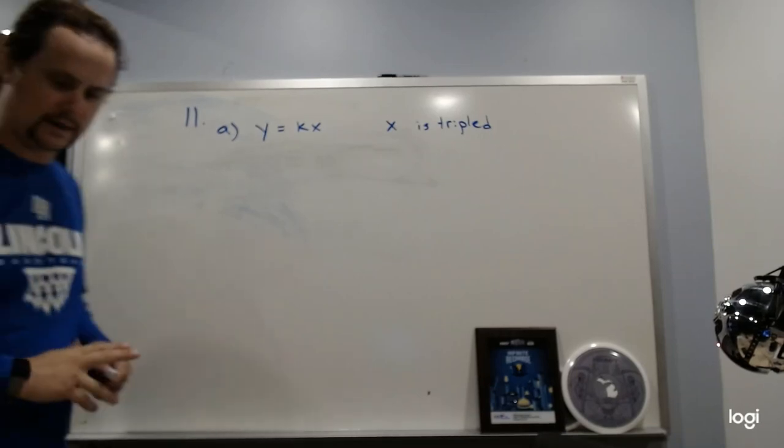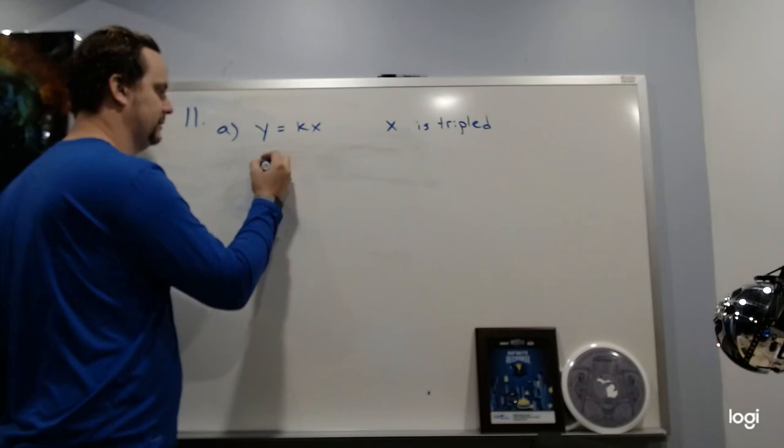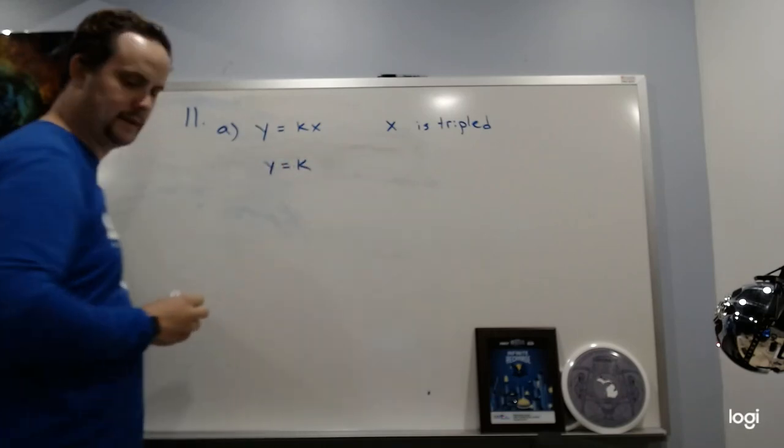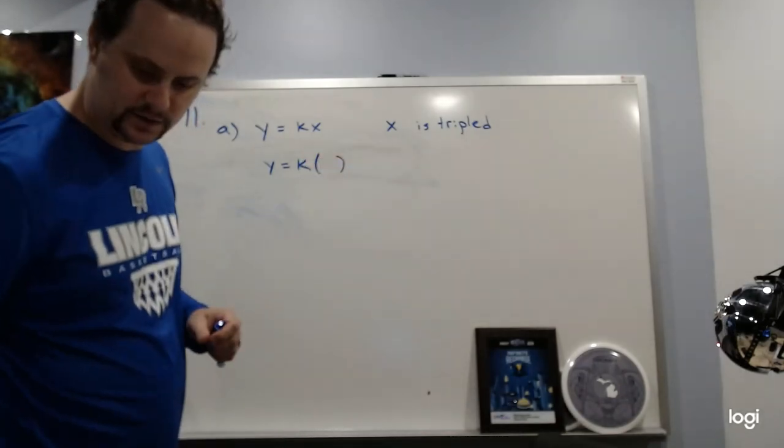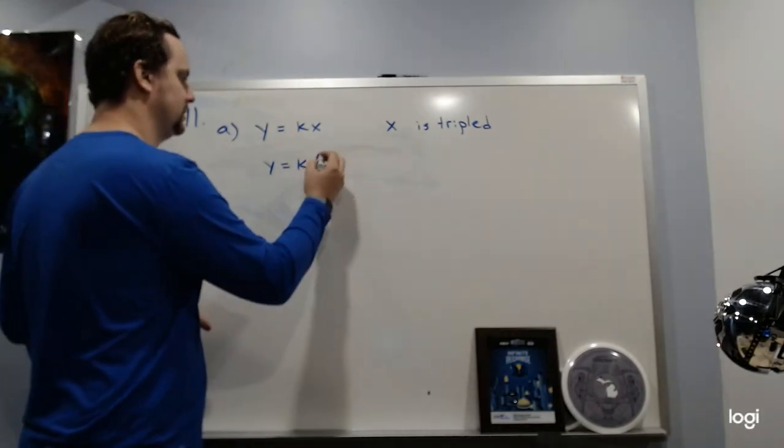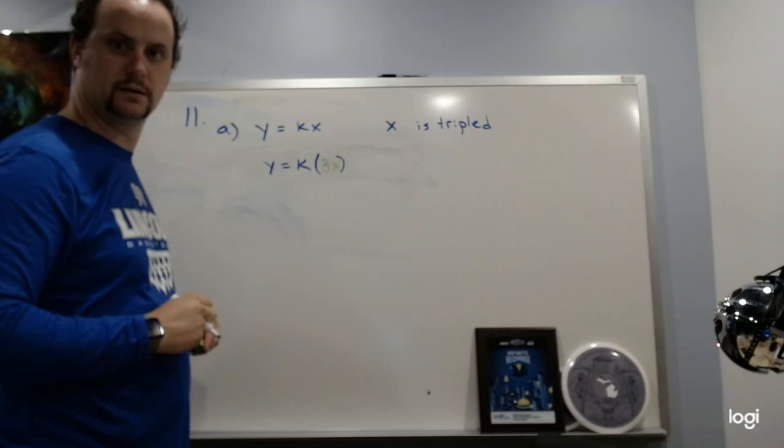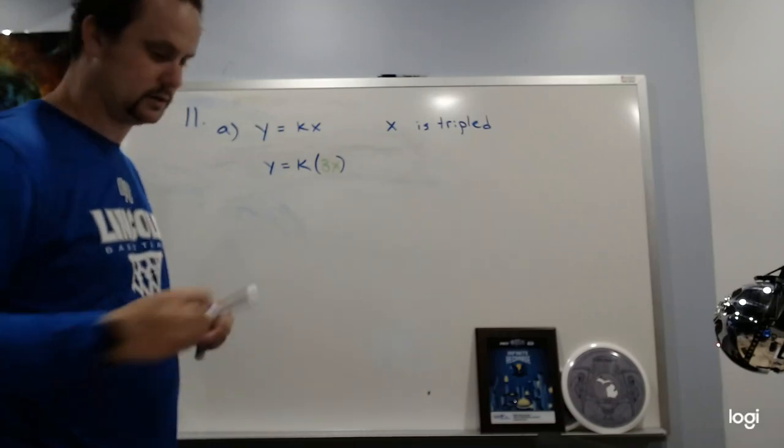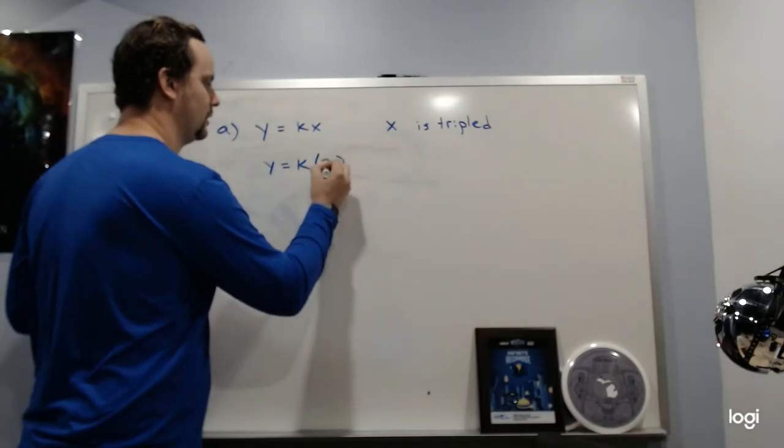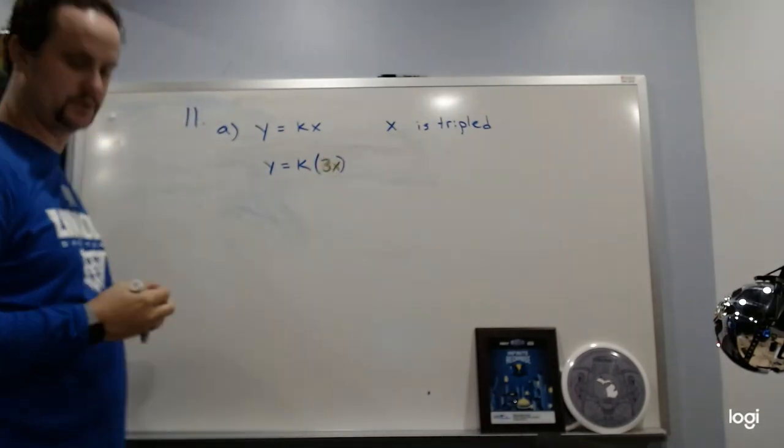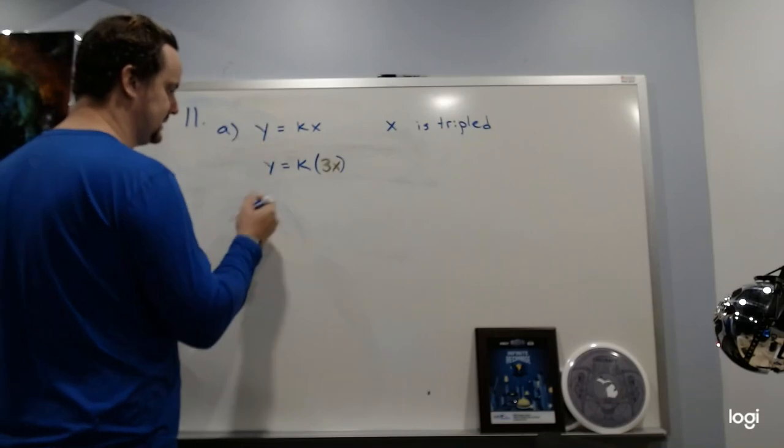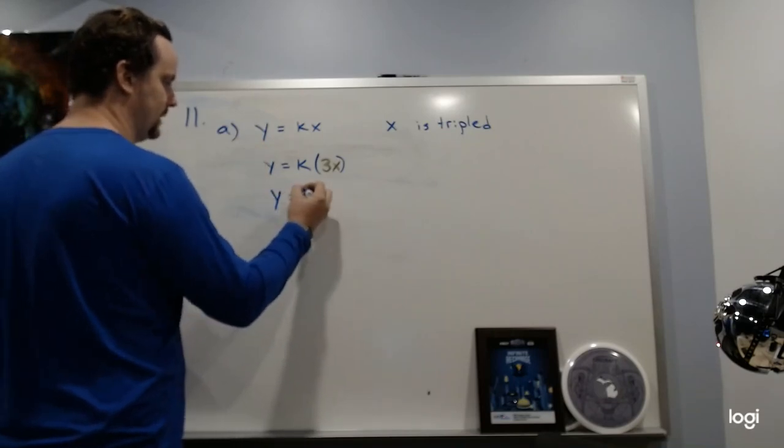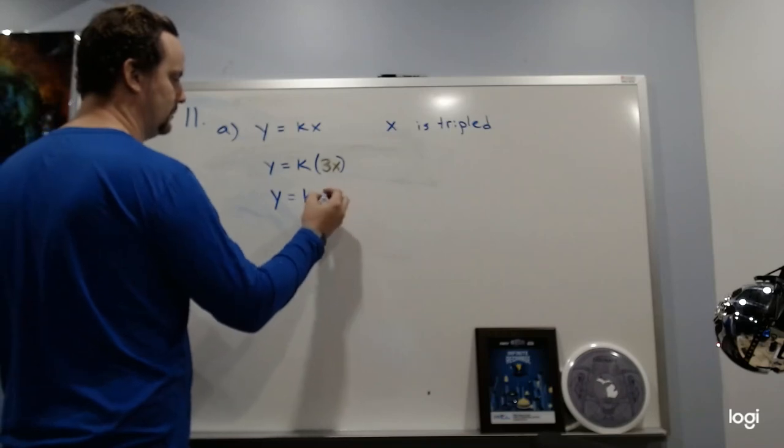tripled. All right, so how I like to do this is I like to go ahead and rewrite what I have here. And for the X, I like to put in, instead of X, it's tripled, so instead of X it's going to be 3X. Can you see that? So instead of X, I got 3X because X was tripled. Triple means three: 3X. So I'm going to work with this side. I got K, and I remember I can move the three out front: 3KX.